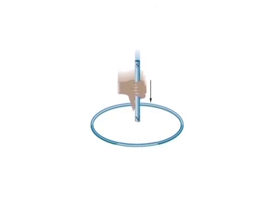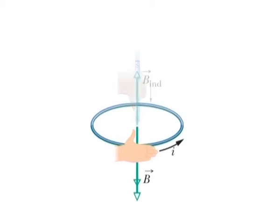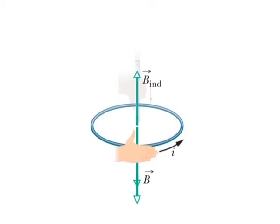Opposition to flux change: with the magnet initially distant, no magnetic flux passes through the loop. As the north pole of the magnet then nears the loop with its magnetic field directed downward, the flux through the loop increases. To oppose this increase in flux, the induced current I must set up its own field directed upward inside the loop, so that the upward flux of that field opposes the increasing downward flux.